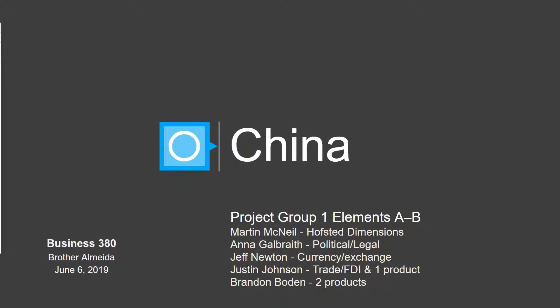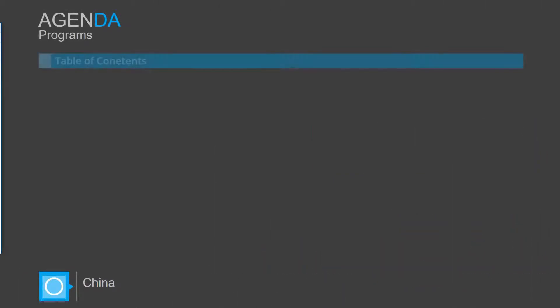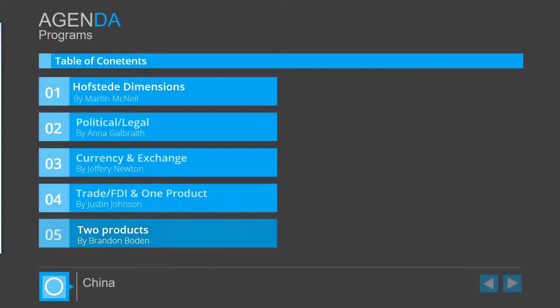China. Group project by group number one for Business 380. Our agenda will be as follows: starting off with the Hofstede dimensions, political and legal, currency and exchange, trade FDI and one product presentation, finalized by two more project presentations.